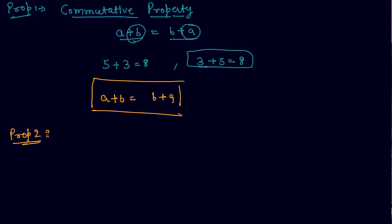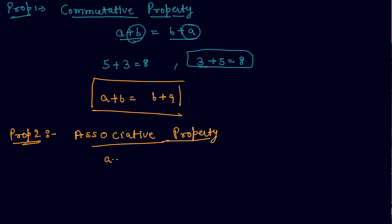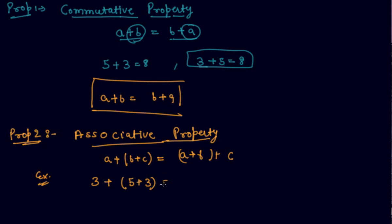Now comes property number two, which is the associative property. Associative property states that if you add a to the quantity b plus c, the result will be the same as a plus b, then plus c. So let me give an example: if I am adding 3 to the quantity 5 plus 3, or equivalently 3 plus 5 to 3.